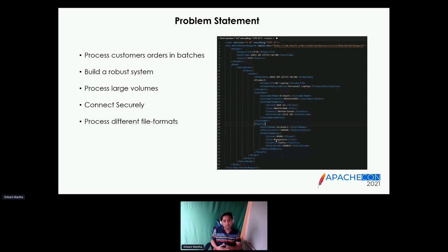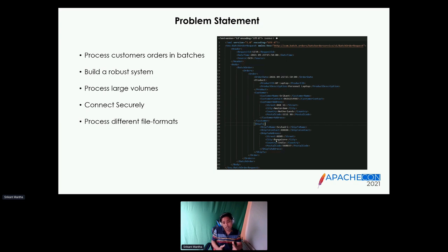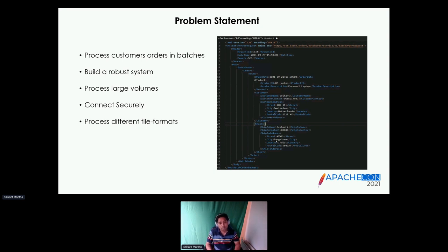We need to build a system robust enough to handle data failures for invalid content, and also resilient enough to resume from the point of failure. We should not forget that we are dealing with customers' confidential data — it has to be accessed in a secure way. Last but not least, we are dealing with multiple clients who have different payload formats: some want JSON, some CSV, XML, or even zipped XML files. So I would like to have all of them processed.